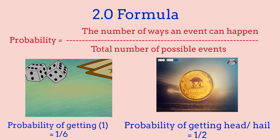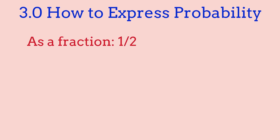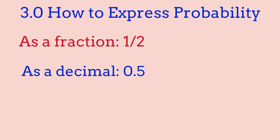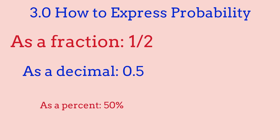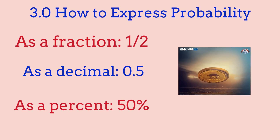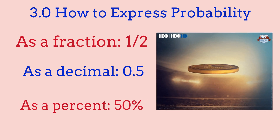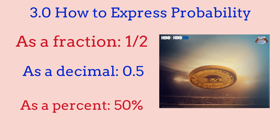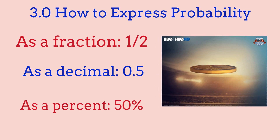Now let's see the different ways that probability can be expressed. We already know that probability can be expressed as a fraction, but probability can also be expressed as a decimal and also as a percent. For example, going back to the coin, we had 1 over 2 as our fraction, so our decimal will be 0.5, and our percent will be 50%.